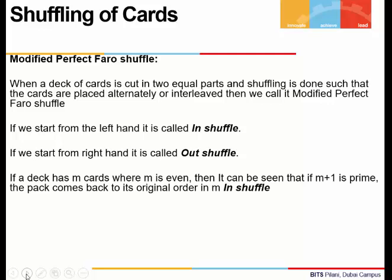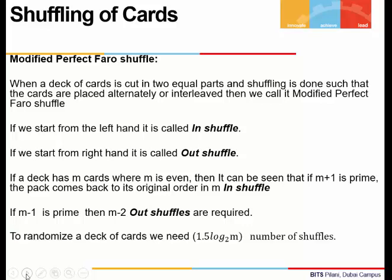If the deck of cards has m cards where m is even, then we can see that if m plus 1 is prime, the deck will come back to its original order after m in-shuffles. And if m minus 1 is prime, then m minus 2 out-shuffles are required.